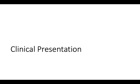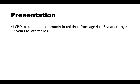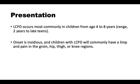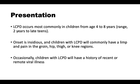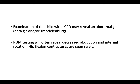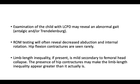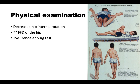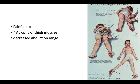Clinical presentation: the child is usually between four to eight years of age. Presentation is typically a limp or pain in the hip, thigh, or knee regions, occasionally with a history of recent or remote viral illness. Examination reveals abnormal gait — antalgic or Trendelenburg. Range of motion shows decreased abduction and internal rotation and possibly fixed flexion deformity. There will be limb length inequality secondary to femoral head collapse, accentuated by hip contracture. Physical examination findings include decreased internal rotation, flexion deformity, positive Trendelenburg test, painful hip, thigh muscle atrophy, and restricted abduction range — particularly important in follow-ups of children treated conservatively.